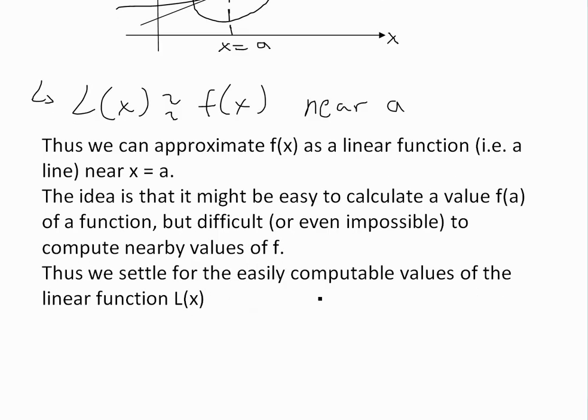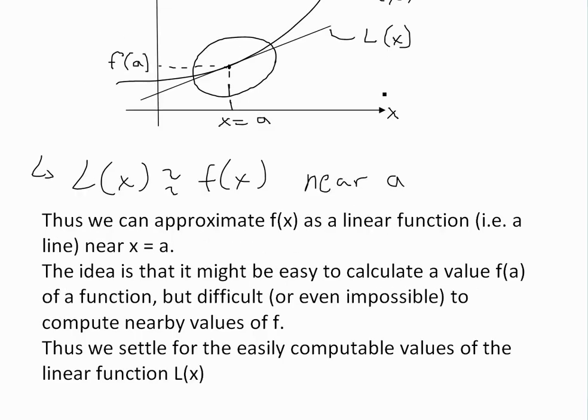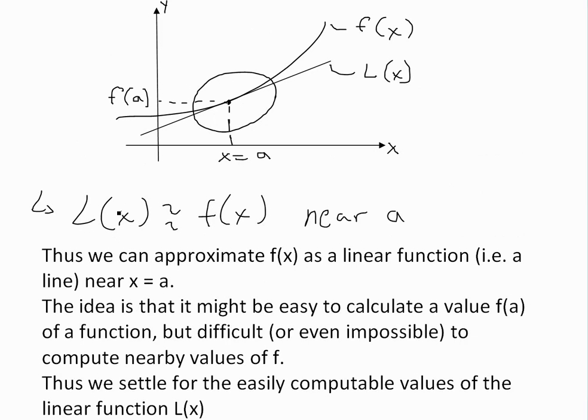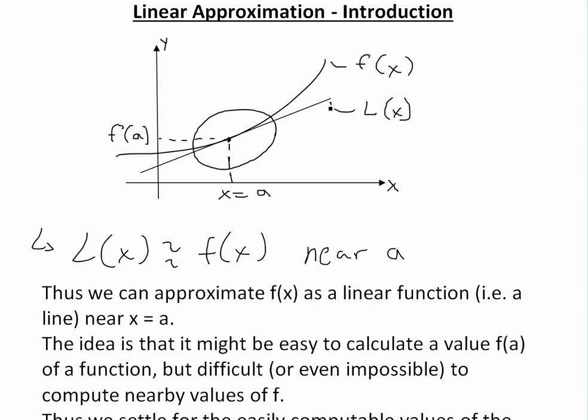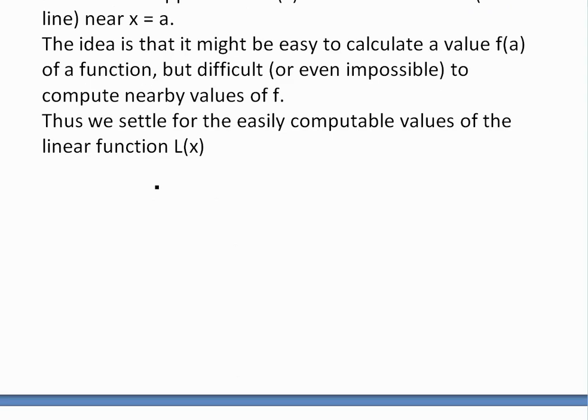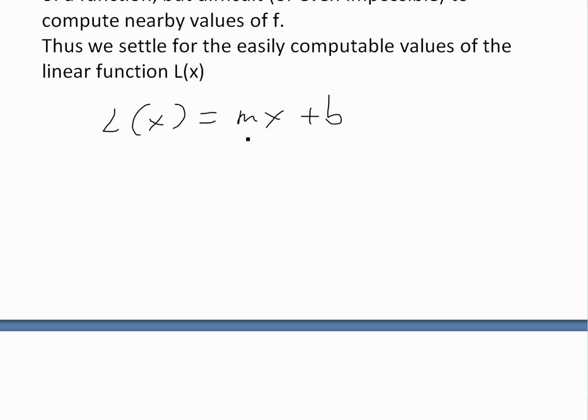Thus we settle for the easily computable values of the linear function L(x). Now all we have to do is solve for an equation for L(x), and it's pretty easy because we know it's tangent to f(x). The equation of a line is L(x) equals mx plus b, where m is the slope, which equals rise over run.